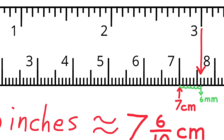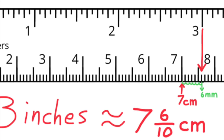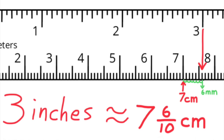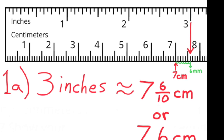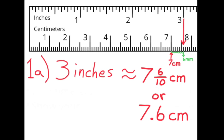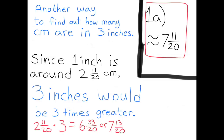Which is seven and six-tenths centimeters. Here's another way to find out how many centimeters are in three inches: since one inch is around two and eleven-twentieths centimeters, three inches would be three times greater. Two and eleven-twentieths times three equals six and thirty-three-twentieths, or seven and thirteen-twentieths.